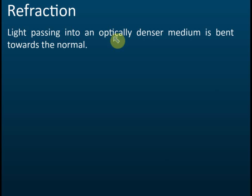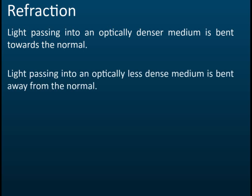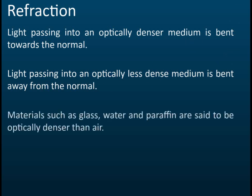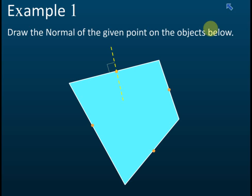Light passing into an optically denser medium is bent towards the normal. When light passes through two different mediums with different optical densities, if we move from a less dense medium into a denser medium, the ray will be bent towards the normal. If it's from denser to less dense, it will be bent away from the normal. Materials such as glass, water, and paraffin are said to be optically denser.